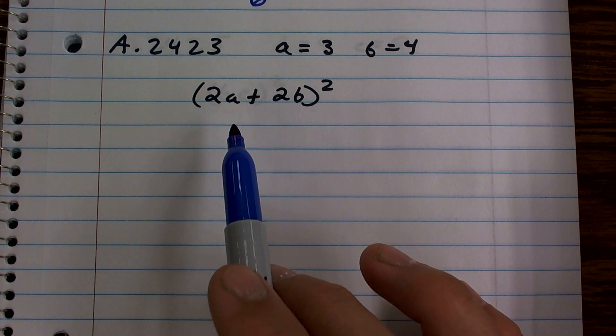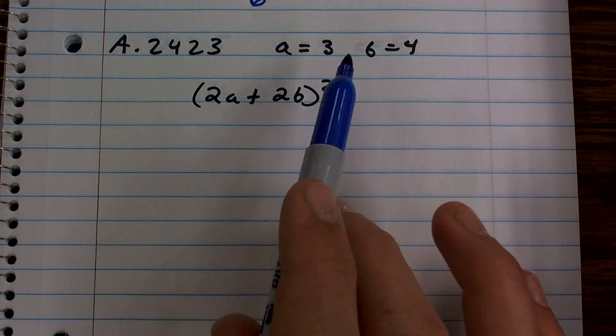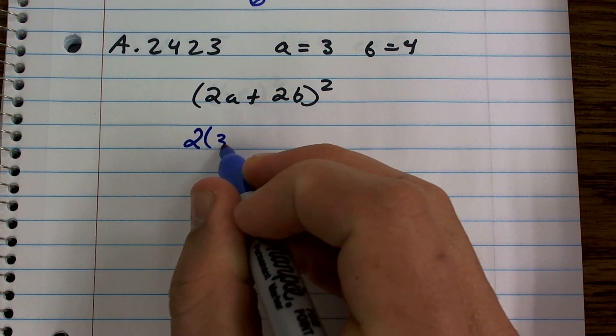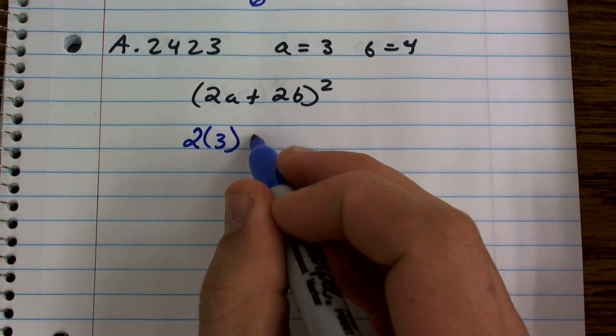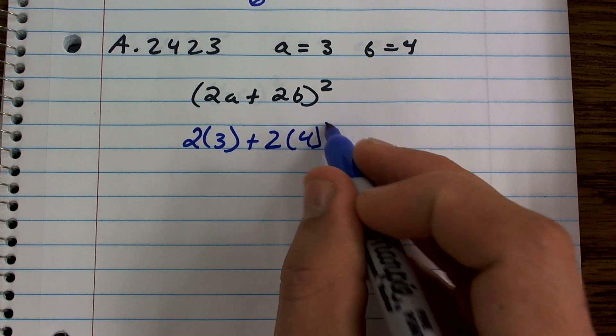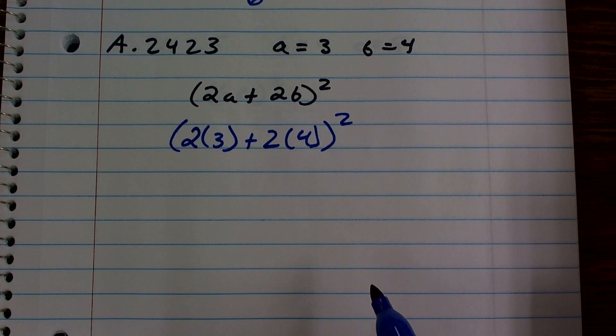The whole reason we use variables is when we don't know the value. But if they tell us what the value is, just use those values. So now I have 2 times 3 as A equals 3 plus 2 times 4 as B equals 4. And remember to keep your parentheses because all of that is squared.